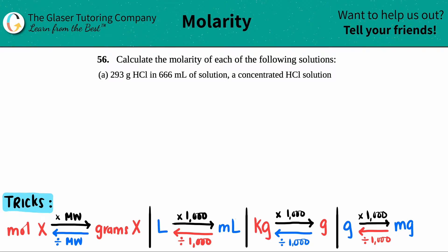Number 56, calculate the molarity of each of the following solutions. In this case, they gave us 293 grams of HCl, and this is all in 666 milliliters of solution. Oh, spooky! And this is a concentrated amount of HCl.